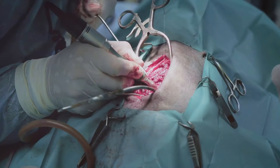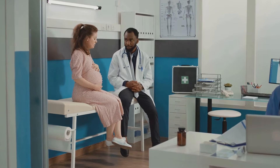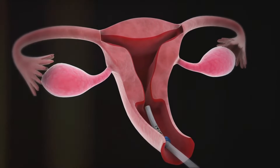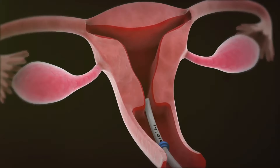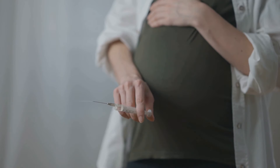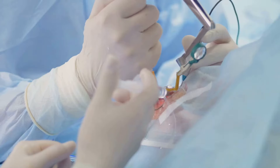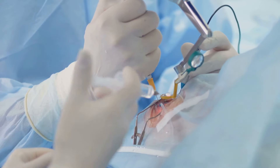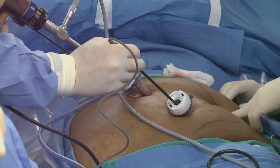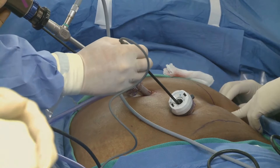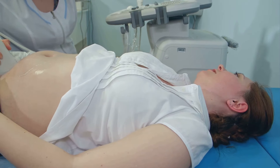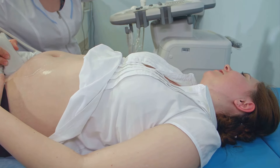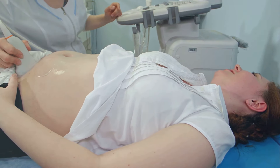Management of CSP can be medical or surgical depending on the specifics of the case. Methotrexate is the primary medical treatment for stable unruptured cases. Local embryocides such as methotrexate, potassium chloride, and etoposide can be injected into the gestational sac under ultrasound guidance. Surgical options include dilatation and curettage, hysteroscopic resection, and laparoscopic or abdominal resection, particularly for exogenic CSP. A combined approach like uterine artery embolization with surgical removal can reduce bleeding risks.